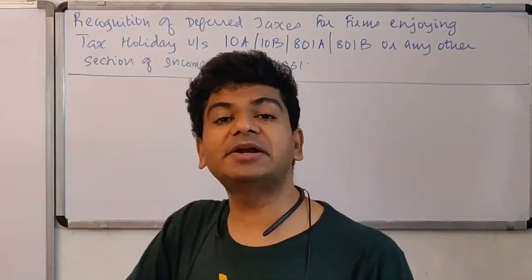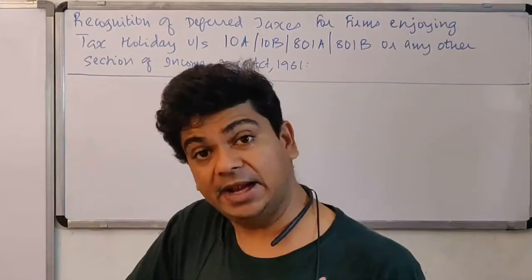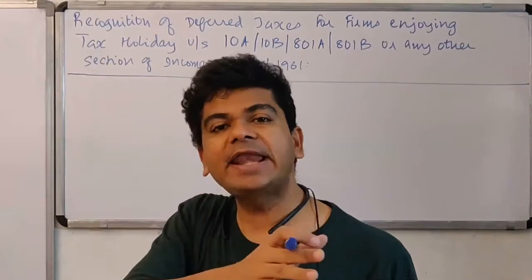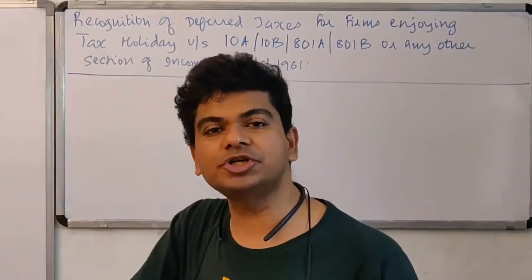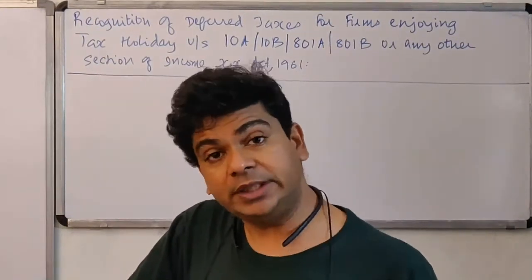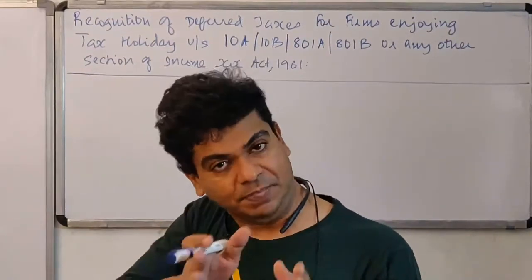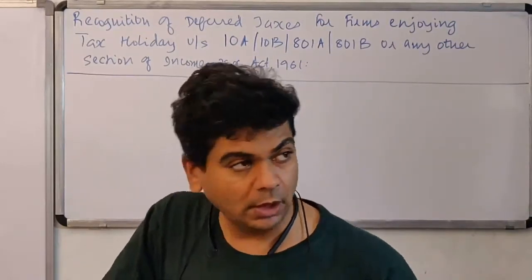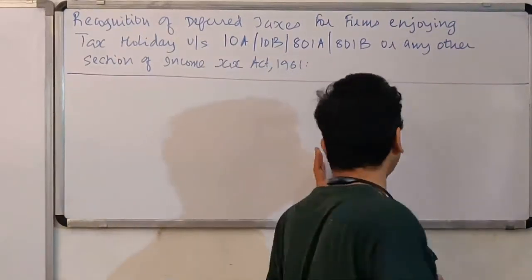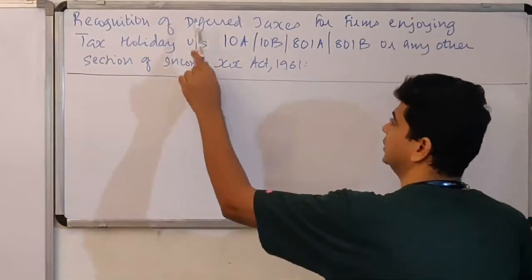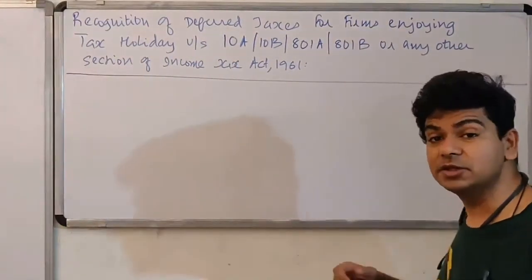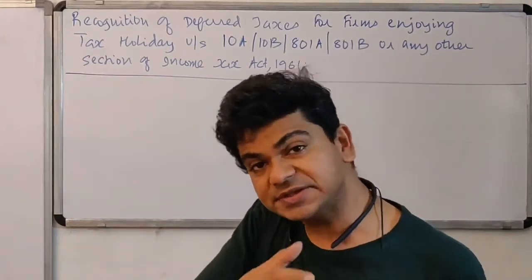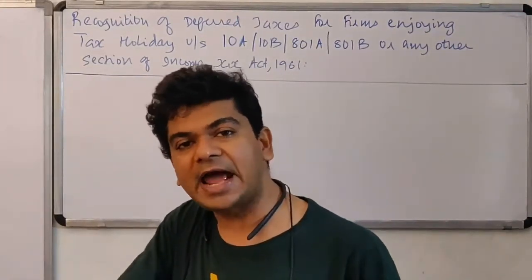For example, let us say a company is attracting section 10A and for 10 years it is not supposed to pay any tax at all, then for 10 years there is no need for us to determine the current tax. However, there can be timing differences, and we know that timing differences will ultimately lead to deferred taxes. So the entire discussion is not with respect to current tax — the discussion is with respect to deferred taxes. How should I measure deferred taxes? How should I compute deferred taxes if a firm is enjoying a tax holiday?